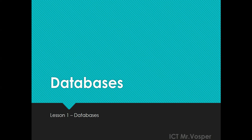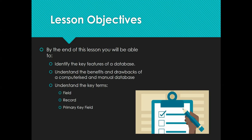Welcome, and today we're going to be looking at databases. This is your first lesson and an introduction into what a database is. By the end of this lesson you should be able to identify the key features of what make up a database, understand the benefits and drawbacks of a computerized and a manual database, and we're going to look at the key terms: a field, a record, and a primary key field.